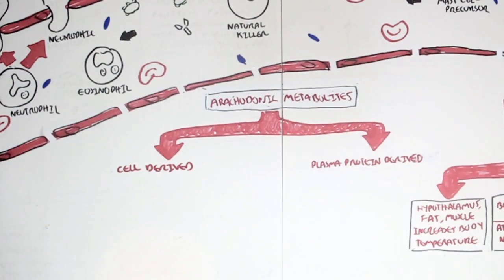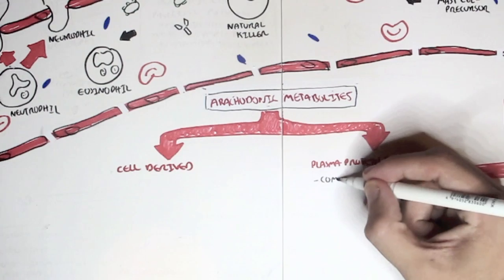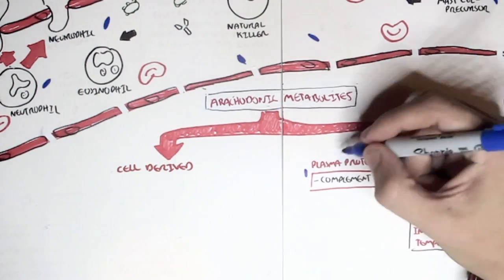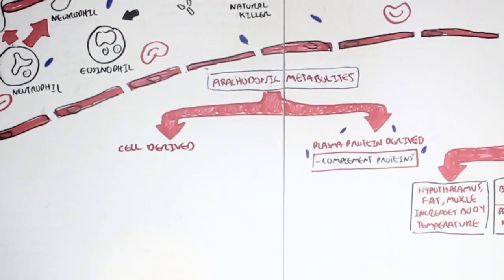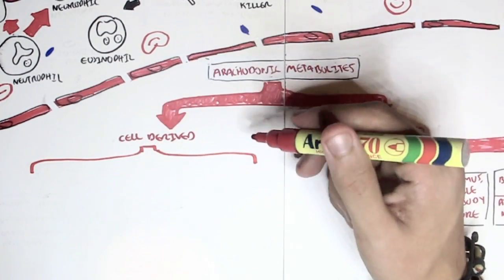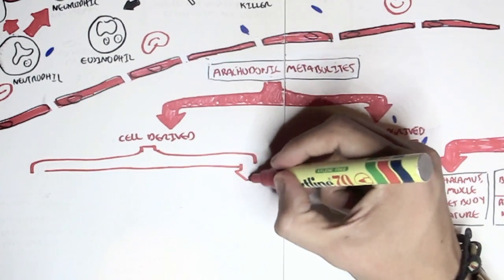There are plasma protein-derived mediators, and there are also cell-derived mediators. A good example of a plasma protein-derived inflammatory mediator is a complement protein, which we have already learned a bit about. Now, these are plasma protein-derived because they travel through the plasma and go into the site of infection and infiltration to promote the immune response.